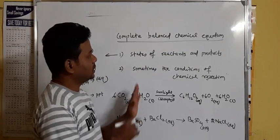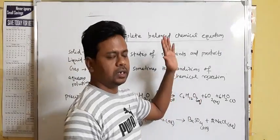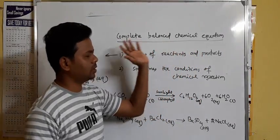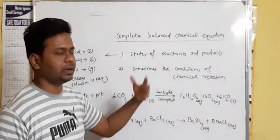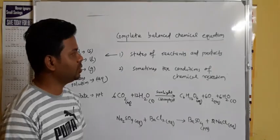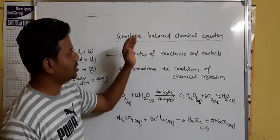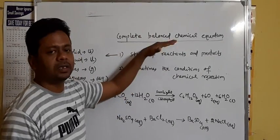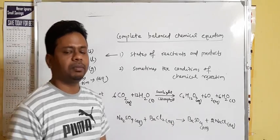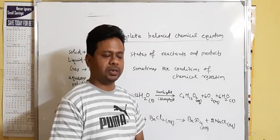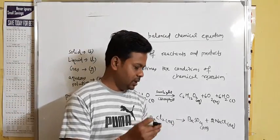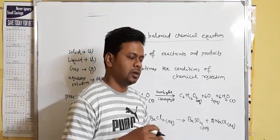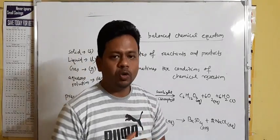This is all about the method by which we can balance a chemical equation, and to make it complete, these things — states and conditions — should be written in the chemical equation. This is all for this session. Thank you very much.